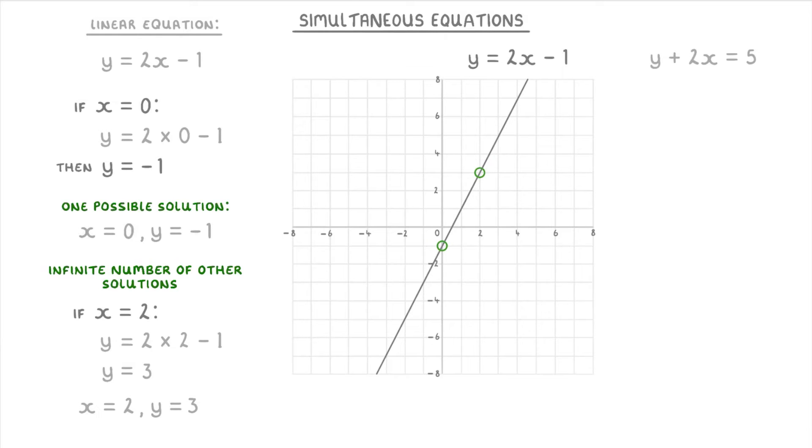It has endless possible solutions such as when x equals 0, y equals 5, or when x equals 2, y equals 1. But there isn't one single true solution that we can find, and so we can't solve it. Again though, we can plot it on a graph to see all the possible solutions.